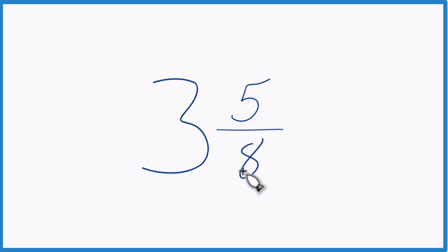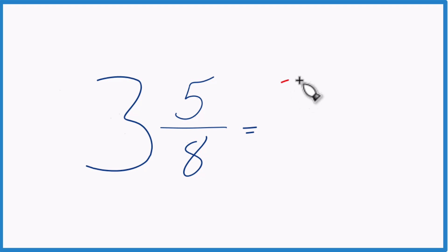3 times 8, that's 24. Let's take the whole number, 3 times 8 here, 24 plus 5, that equals 29.